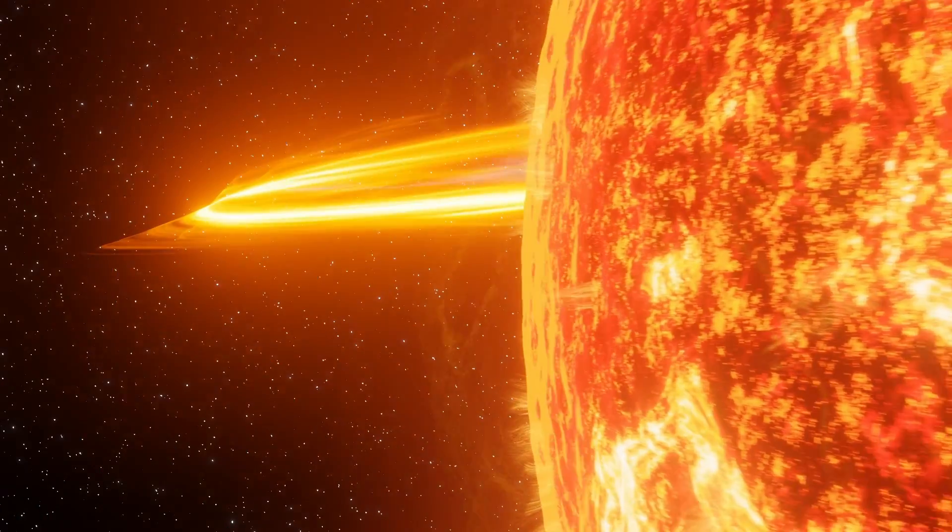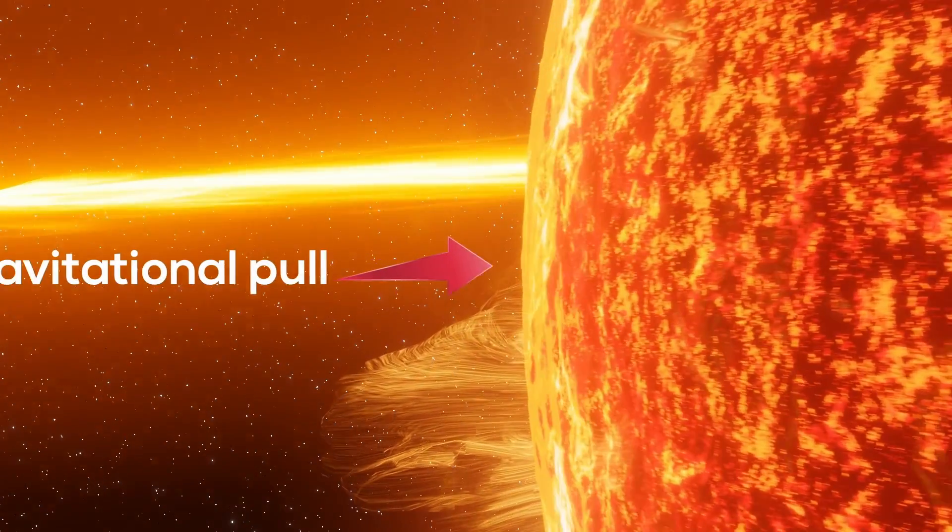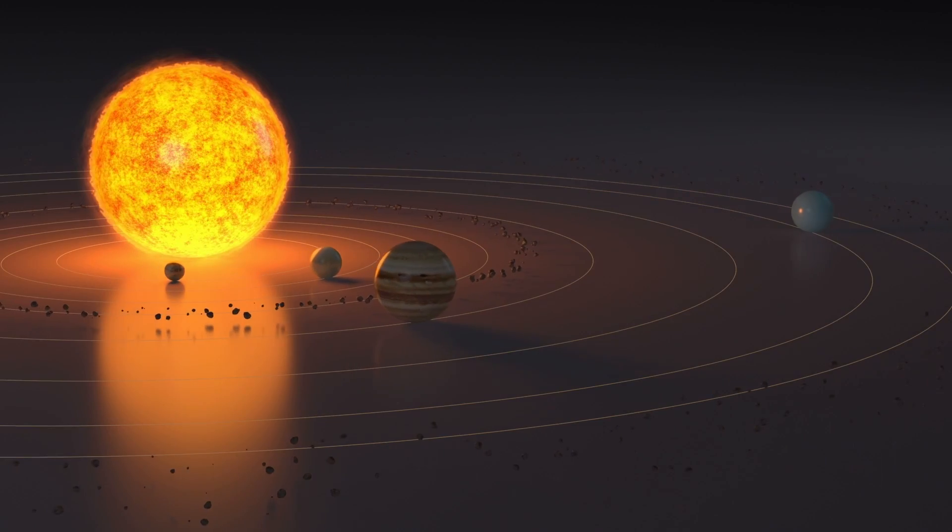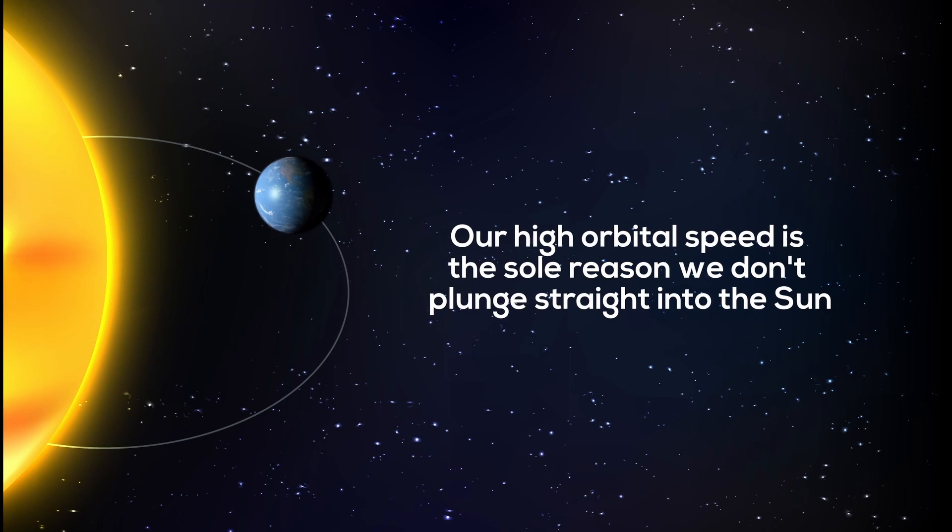Owing to its unfathomable size, the Sun exerts an incredibly strong gravitational pull on all the entities within our solar system, including the Earth. Therefore, our high orbital speed is the sole reason we don't plunge straight into the Sun.